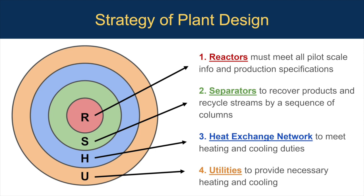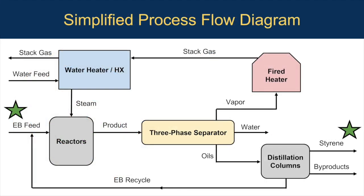Finally, if there are required utilities to fulfill any remaining heating or cooling requirements, they can be calculated. This is a simplified process flow diagram of our plant, with the green stars representing the beginning and end of the main process. The ethyl benzene recycle stream is mixed with a fresh ethyl benzene feed prior to the reactor. The reactor is provided steam by the fired heater and water heat exchanger. The fired heater is powered by the hydrogen-rich vapor mixture gathered from the three-phase separator, which creates a hot stack gas used to superheat the water. The three-phase separator also produces a water and oil stream, and the oil stream is pumped to the distillation columns where it creates the styrene and byproducts of the reaction.